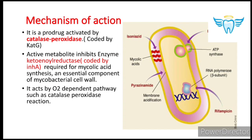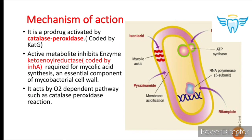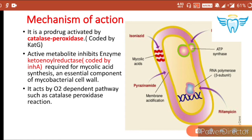What is the mechanism of action of isoniazid? Isoniazid is a prodrug which is activated by catalase peroxidase. Catalase peroxidase is an enzyme coded by katG — remember this because it is asked in MCQs. The active metabolite inhibits the enzyme keto-enol reductase, which is required for mycolic acid synthesis.